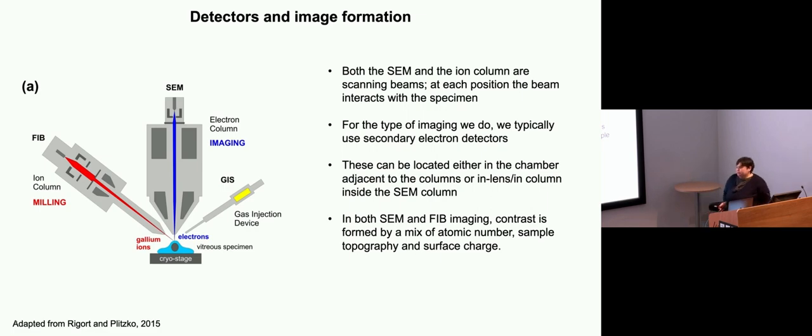Finally, I want to briefly talk about detectors and image formation, because this can sometimes cause some confusion, as we're used to thinking more about TEMs. Both the SEM and the FIB column are scanning beams. It scans across the specimen, and at each point it interacts. There are various scattering events that happen. You can have all sorts of different types of detectors. But for the type of imaging we do, which is generally fairly low voltage because we don't want to damage our lamellae before we do our tomography.